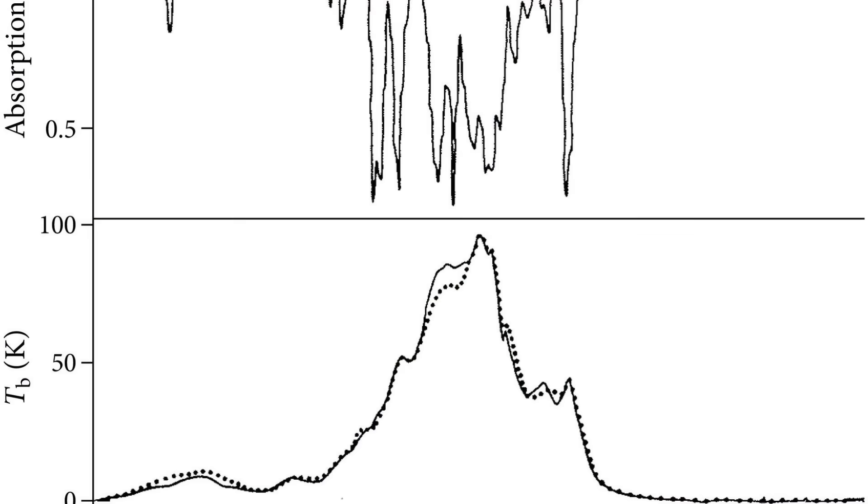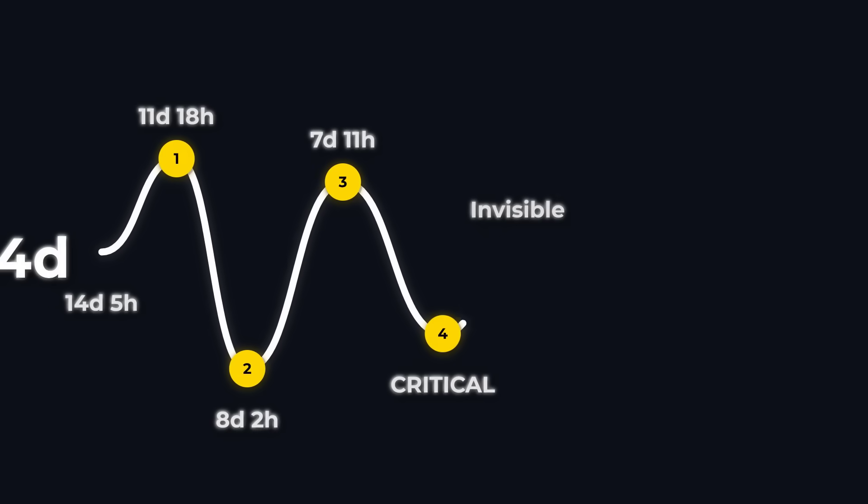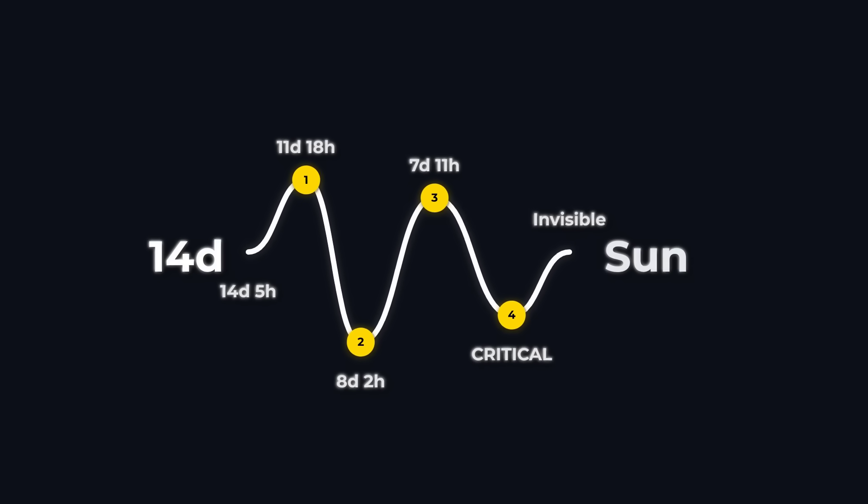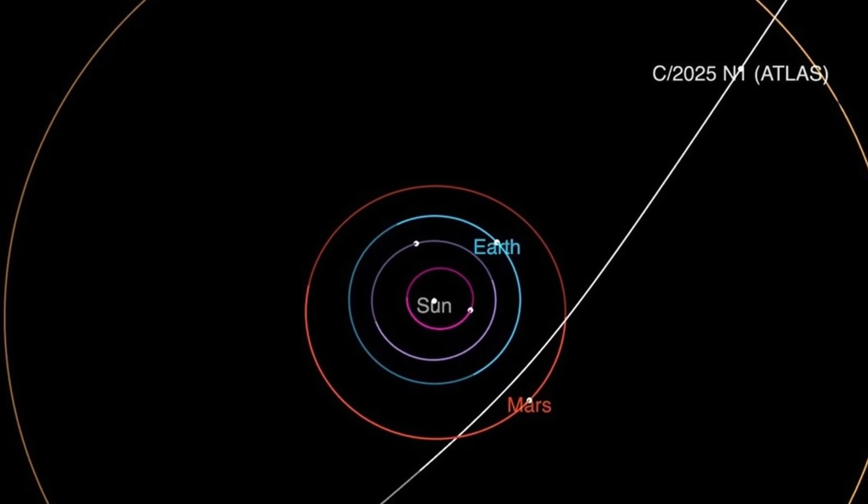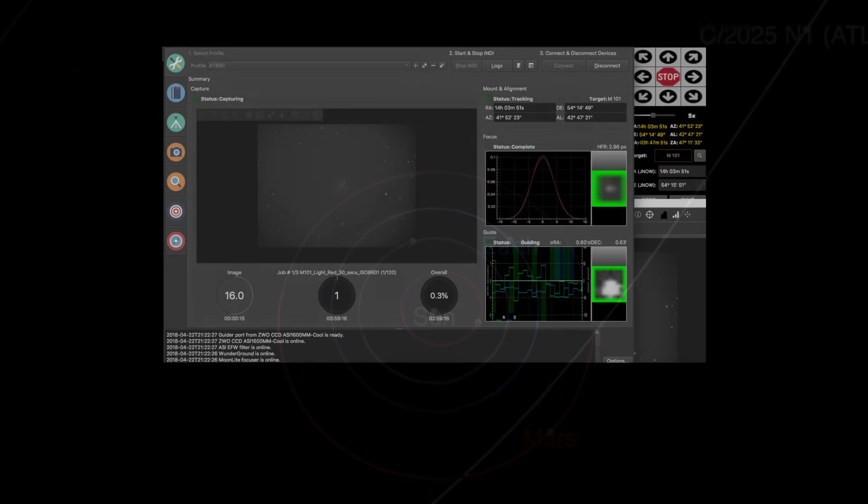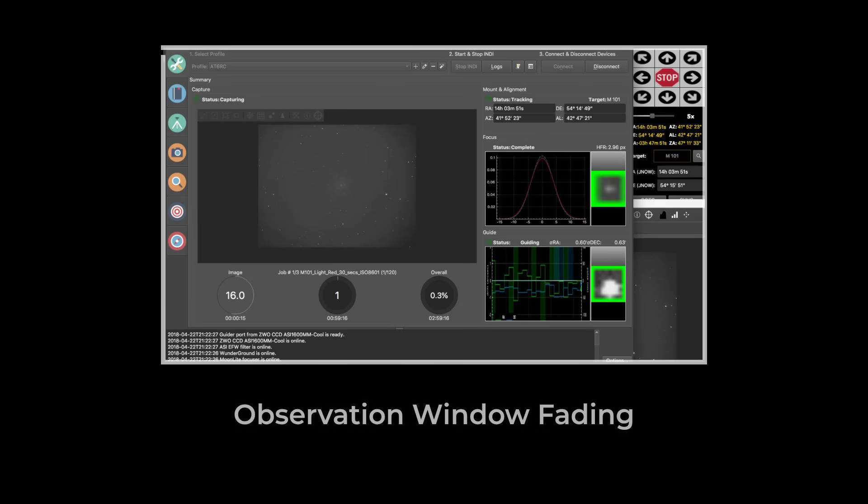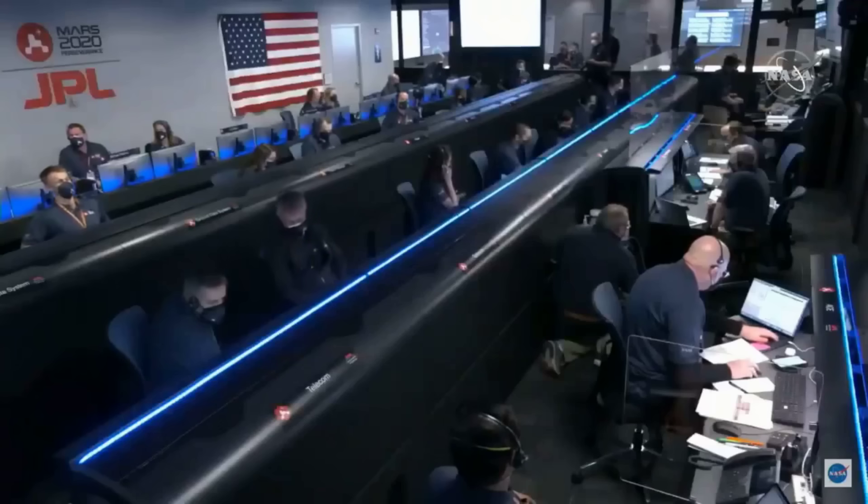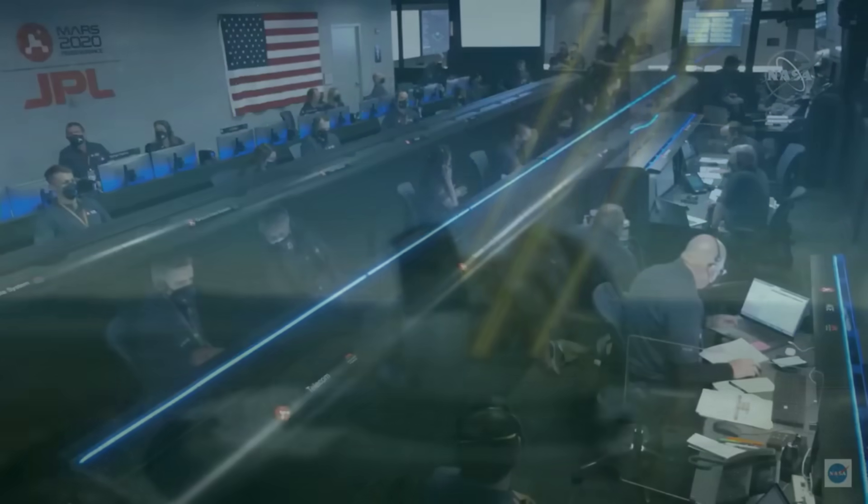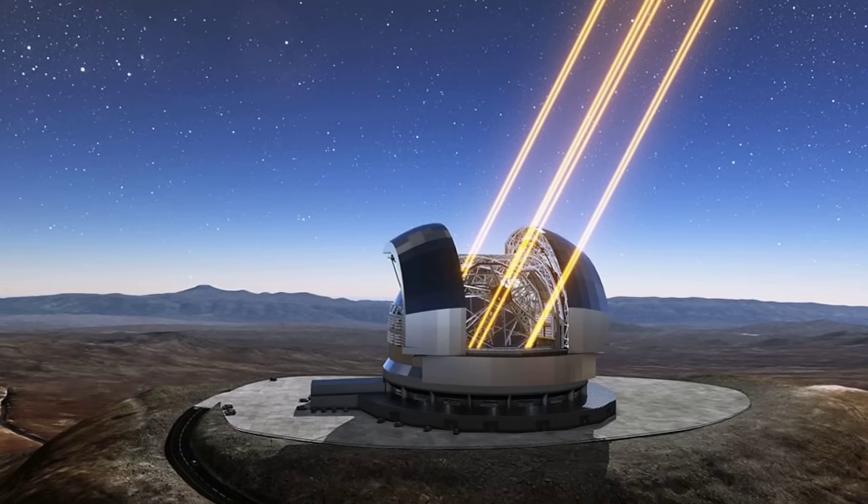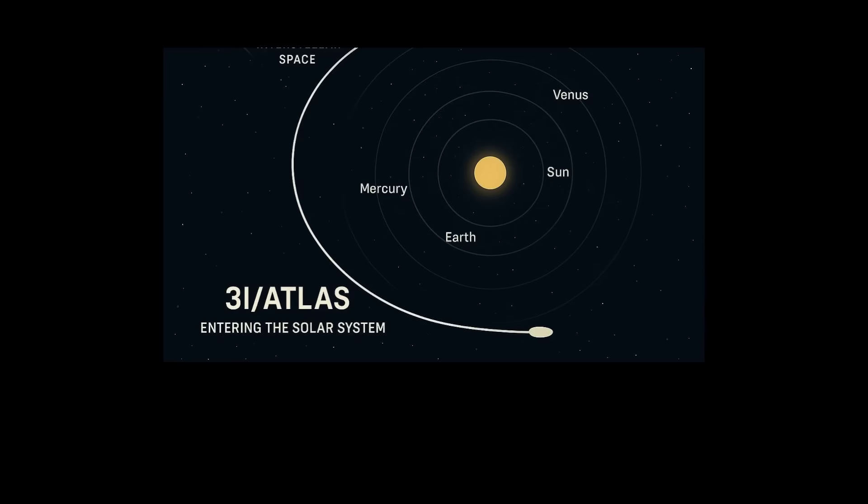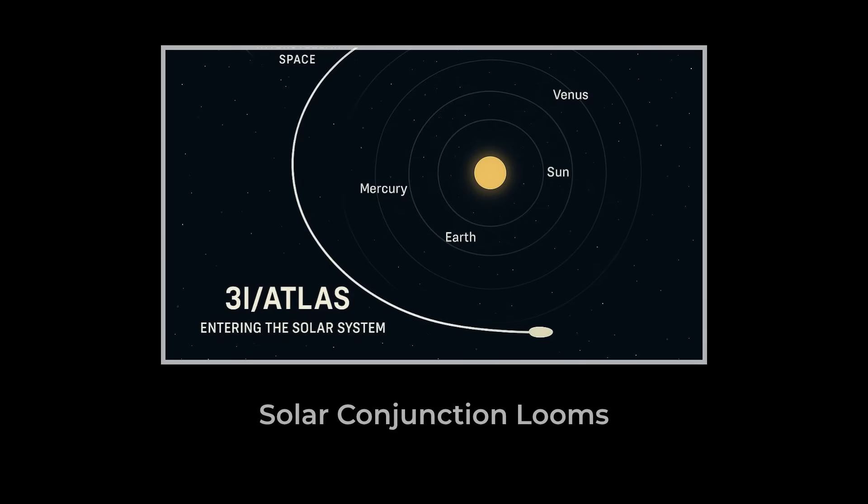Astronomers are squeezing every possible measurement out of this brief window. Spectra, brightness, even hints of a tail. But once 3I/ATLAS slips behind the sun, it could stay invisible for weeks. There is no guarantee it will be picked up again on the other side. That is why the urgency is real.